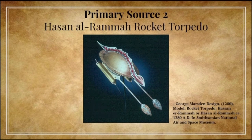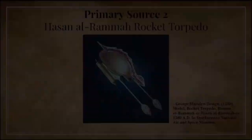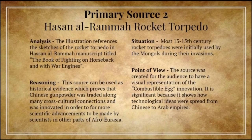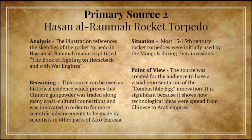Primary Source 2: Hassan al-Rama Rocket Torpedo. Analysis: The illustration references the sketches of the rocket torpedo in Hassan al-Rama's manuscript titled The Book of Fighting on Horseback and the War Engines. Reasoning: This source can be used as historical evidence which proves that Chinese gunpowder was traded along many cross-cultural connections and was innovated in order for more scientific advancements to be made by scientists in other parts of Afro-Eurasia. Situation: Most 13th through 15th century rocket torpedoes were initially used by the Mongols during their invasions. Point of View: The source was created to give the audience a visual representation of the combustible egg innovation. It is significant because it shows how technological ideas were spread from Chinese to Arab empires.